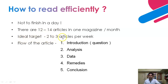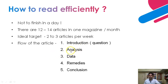What shall be the ideal target? It should be 2 to 3 articles per week. And to understand each article, understanding its flow is very important. So, how is the flow of every Yojana article? First comes the introduction of the subject — the introduction of the issue the author is discussing. After that comes the analysis of the issue, its data, then remedies, and lastly the conclusion. So, in this way, every article has a flow. If you can understand this flow, then reading Yojana will become very easy for you.